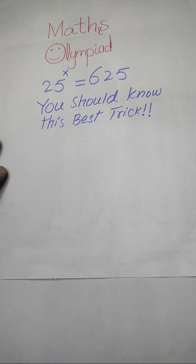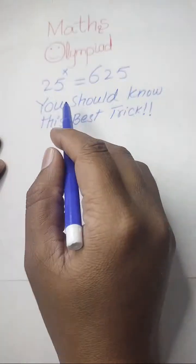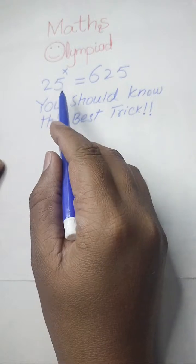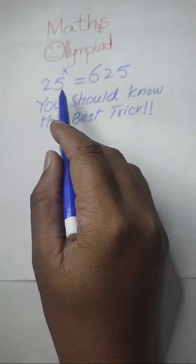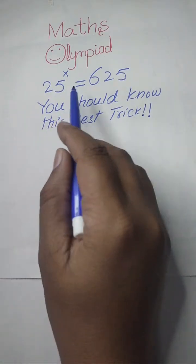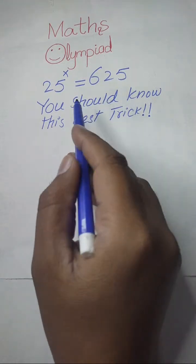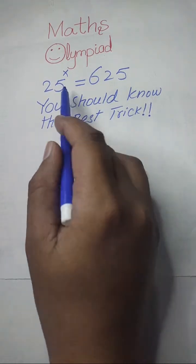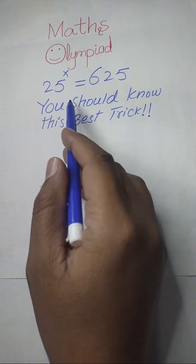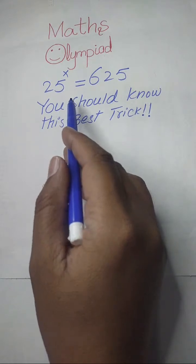Everyone, welcome back to the Map of Mathematics. In this video, we are going to solve a nice Math Olympiad problem. The very first thing we are going to do is: here we have 25 to the power of x is equal to 625, and here we will find the value of x or solve this expression for the value of x.